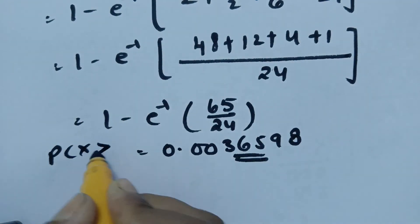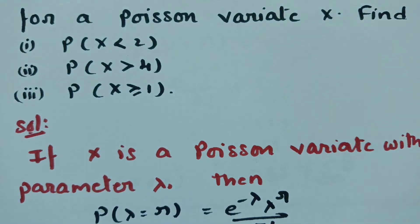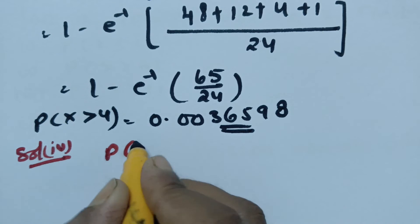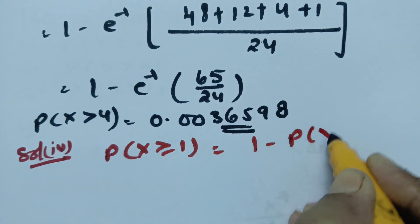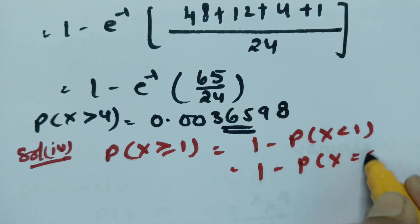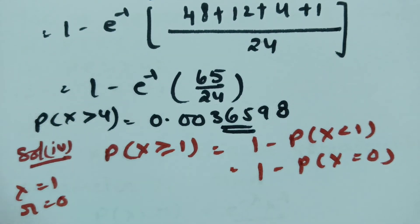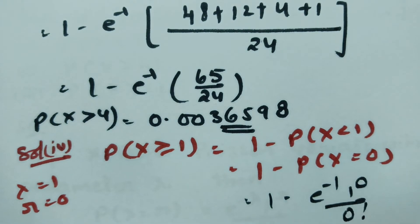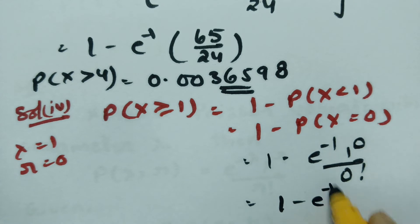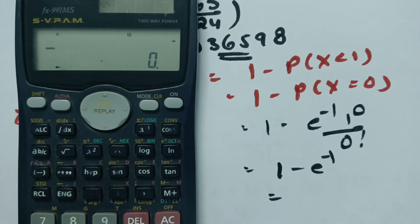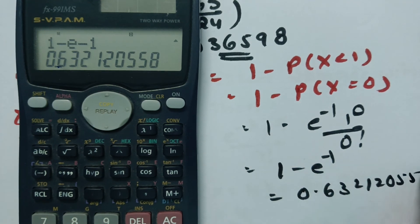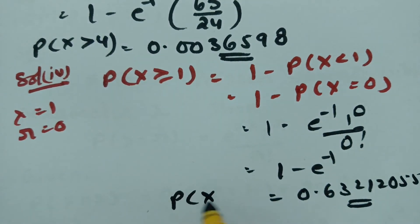Solution 3: Probability of x greater than or equal to 1 equals 1 minus probability of x less than 1, which equals 1 minus probability of x equals 0. With lambda equals 1 and r equals 0, using the formula: 1 minus e to the power minus 1 times 1 to the 0 by 0 factorial equals 1 minus e to the power minus 1, which equals 0.632120558.